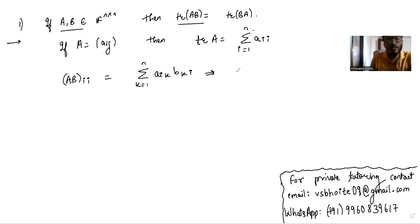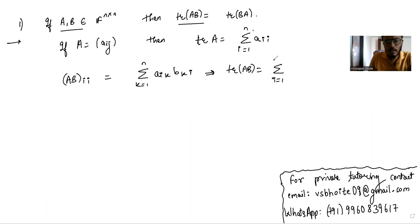This implies that trace(AB) is the summation, i goes from one to n, of (AB)_{ii}.